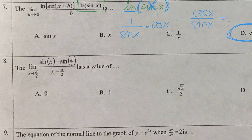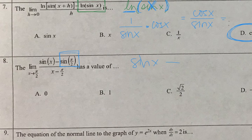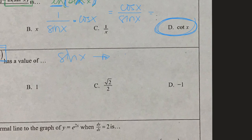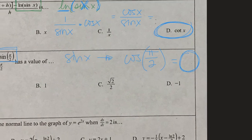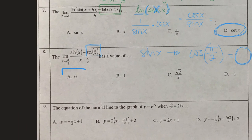This problem is asking for the derivative of sine evaluated at pi over 2 — recognizing the limit as a difference quotient definition of the derivative. The derivative of sine is cosine. The cosine of pi over 2 is 0, so the answer is 0.